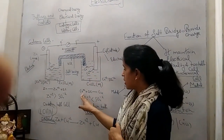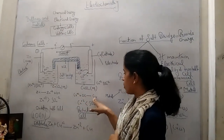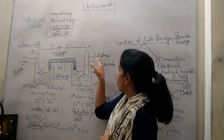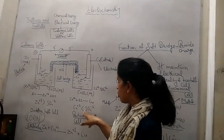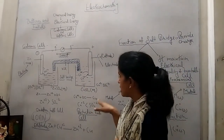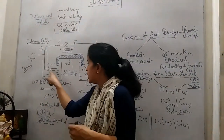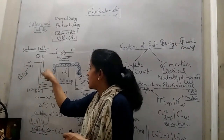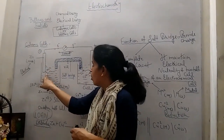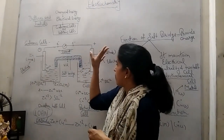The same happens on the other side. When Cu²⁺ from the electrolyte takes two electrons to become copper and collects on the copper rod, the concentration of SO₄²⁻ increases. When the Zn²⁺ concentration increases, it does not allow electrons to go from zinc to copper.